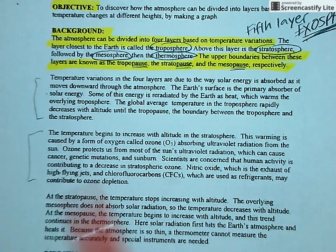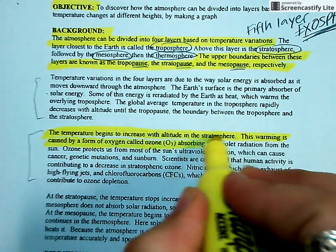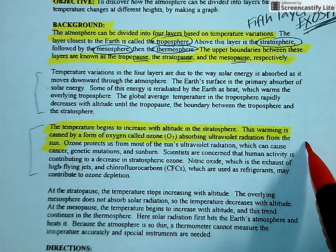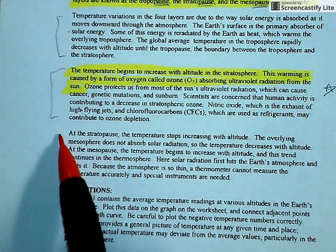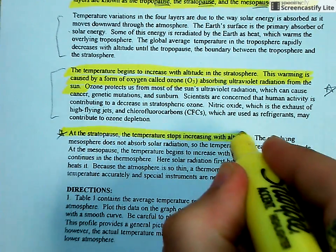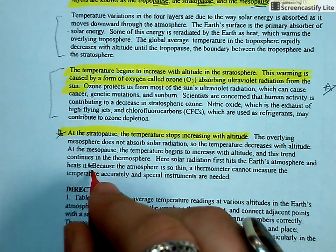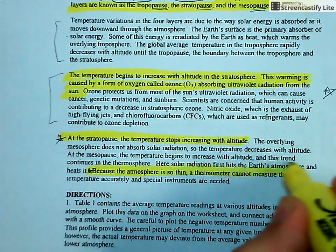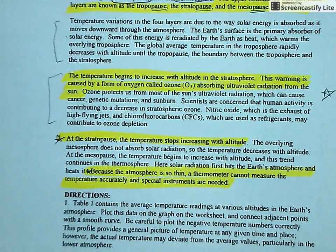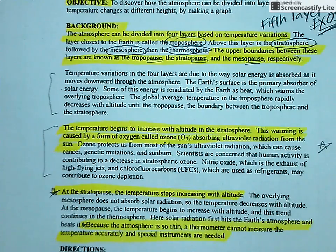Then this talks about why temperature begins to increase with altitude in the stratosphere. That's important to know, that this warming is caused by ozone. And then at the stratopause, temperature stops increasing with altitude. And we'll see this when we graph. And then because the atmosphere is so thin, once you get to the thermosphere and the exosphere, you can't really measure temperature accurately, and you need special instruments. So make sure you read through that before you go any further.